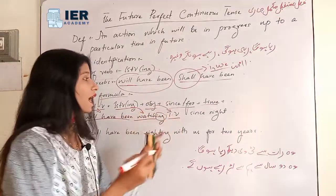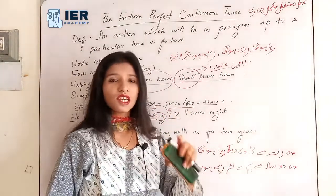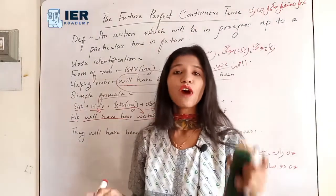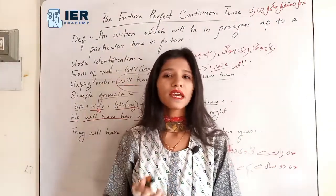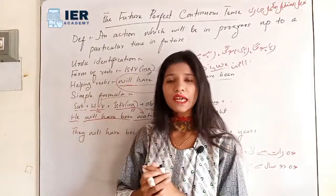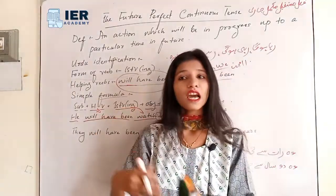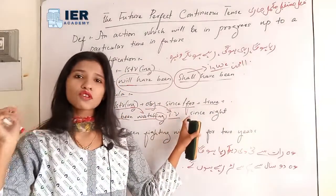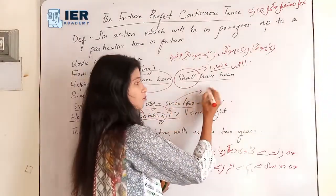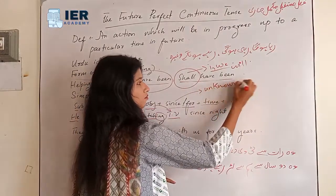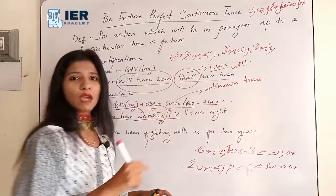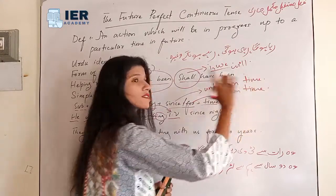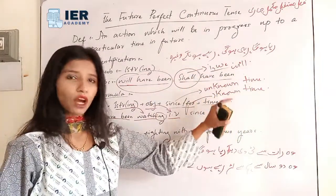After the object we add since or for, because in perfect continuous tenses we always indicate time — telling when the action started or until when it will continue. 'Since' is used for a known specific point in time when the exact time is not known precisely, and 'for' is used for a duration of time when we know the exact period.